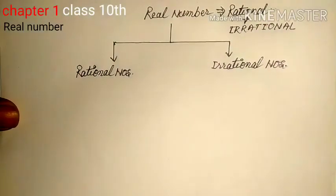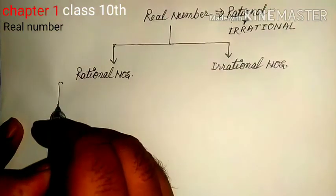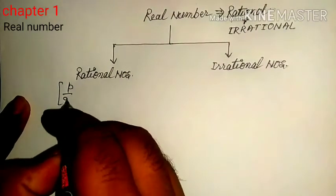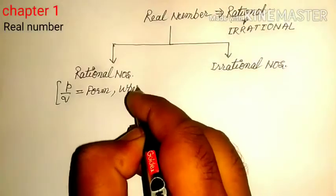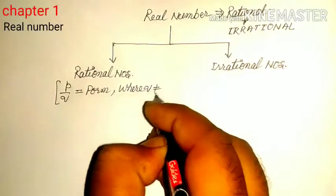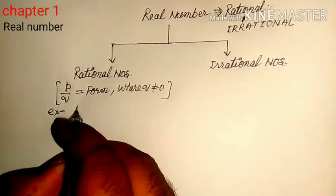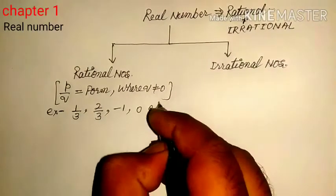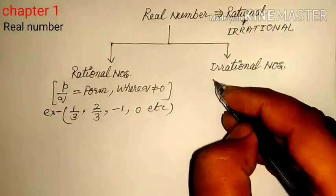So we won't go into detail; I want to give you only a brief idea. First, we will discuss rational numbers. A rational number is a number in the form of P upon Q, where Q does not equal zero. For example, 1/3, 2/3, minus 1, and 0. Such numbers are known as rational numbers.